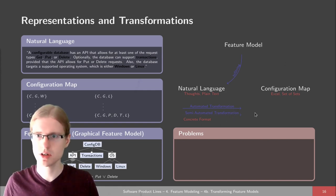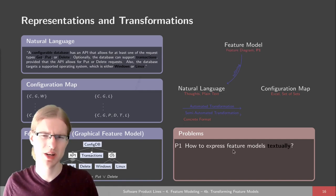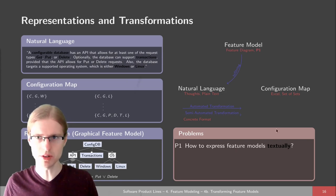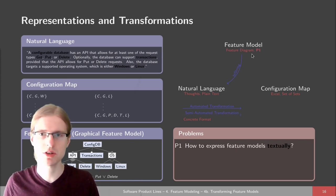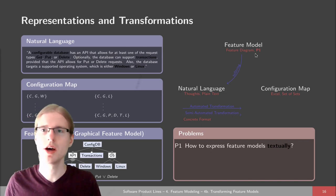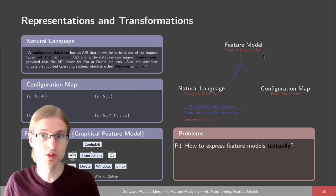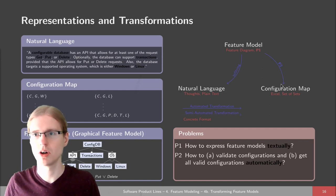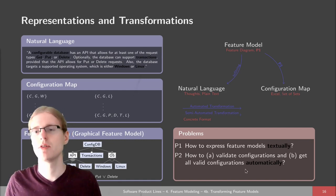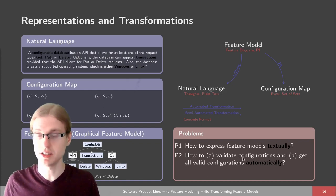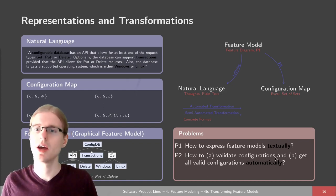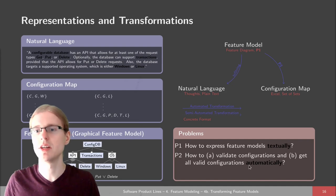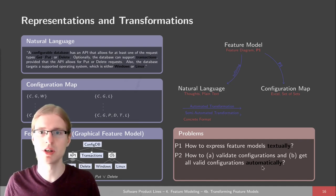Looking at this picture, we can ask several questions. First, how can we express feature models textually? We've only seen a graphical representation — the feature diagram — but we could also ask how to put this into a text file to communicate and edit it easily. Then we can also ask how to get from a feature model to a configuration matrix or configuration map, to validate a given configuration, check whether it's correct, and also get all valid configurations automatically and efficiently.